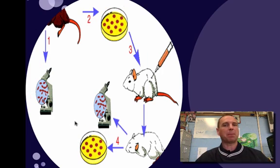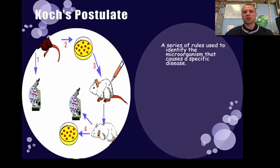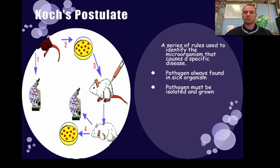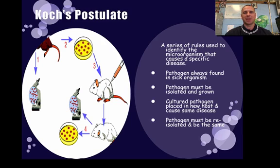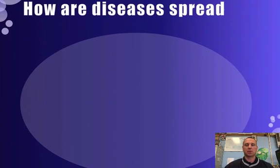If we can find a pathogen, we can hopefully find a cure. The more scientific definition of Koch's Postulate is that it's a series of rules used to identify microorganisms that cause a disease. The pathogen must always be found in the sick organism. The pathogen must be isolated and grown. The cultured pathogen must be placed in a new host and cause the same disease — if it causes different symptoms, we probably didn't have the right pathogen. And the pathogen must be re-isolated and be the same as what it started with, to make sure it hasn't mutated. That's basically what Koch's Postulate is — it gives us a way to figure out what the pathogen is so we can find a cure.